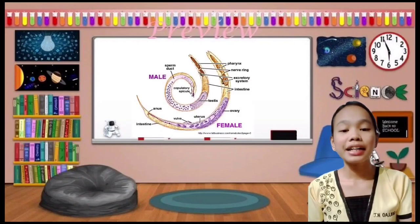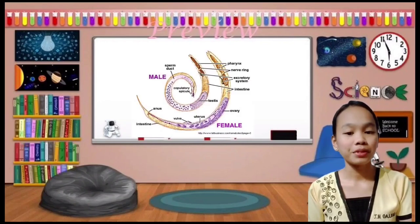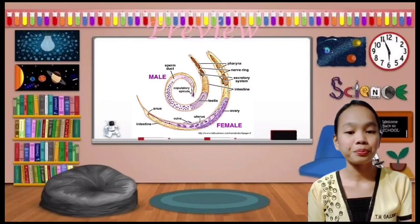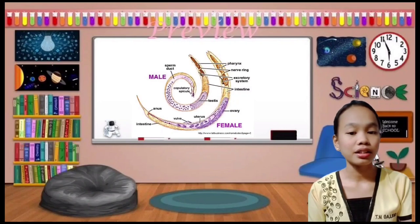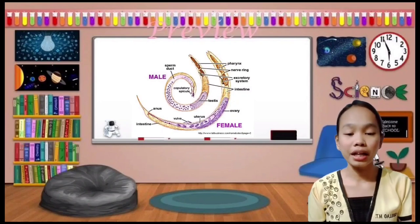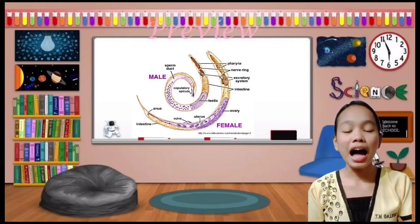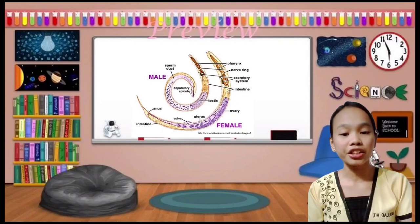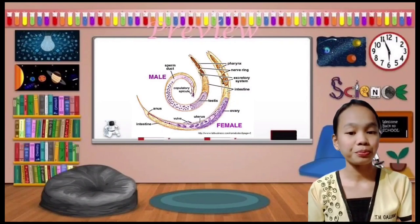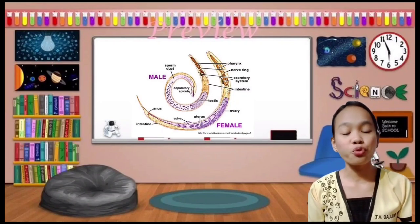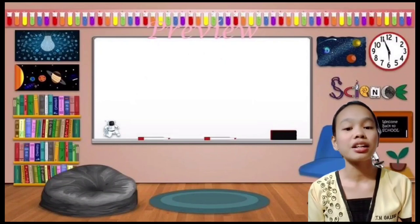The adult worm resembles an earthworm. It has an elongated body tapering at both ends, with the anterior end thinner than the posterior. The freshly excreted worm is yellowish in color, gradually changing to white. Ascaris lumbricoides is sexually dimorphic — the adult male measures 15 to 30 cm in length and 3 to 4 mm in diameter with a curved tail, while the adult female measures 20 to 40 cm in length and 2 to 6 mm in diameter with a straight tail.